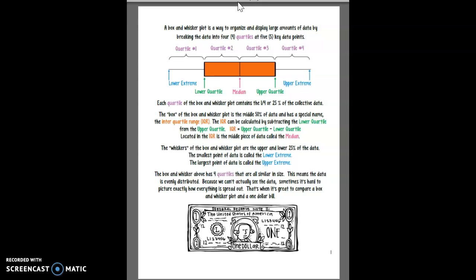If you think a dollar is made of four quarters, these are four quartiles. It's very similar at five key data points.